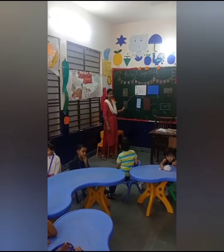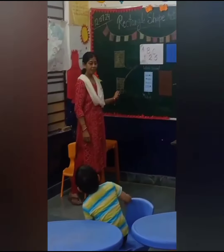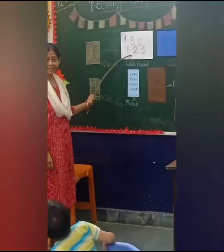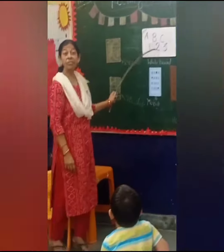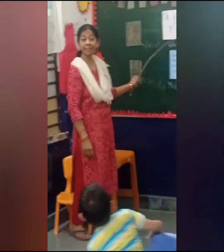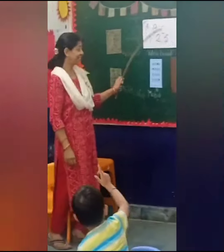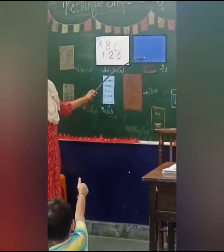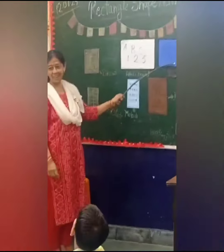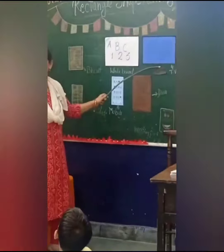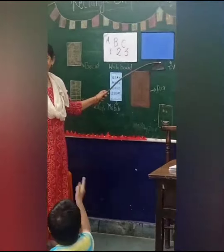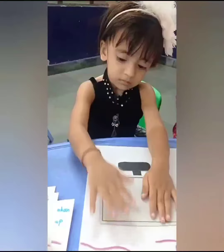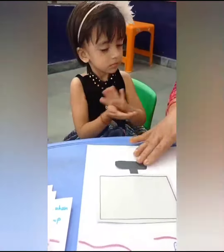What is this? What is this? What is this? Rectangle. What is this? TV. What shape is this? Rectangle. That's four sides.